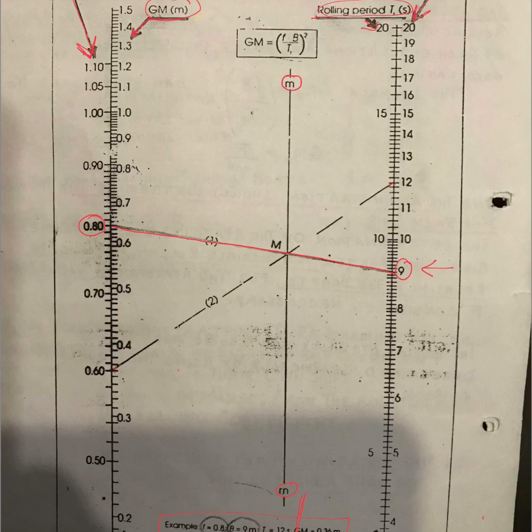The line in the center, which is mm, is also drawn in the diagram. Wherever it cuts the center line, that point is marked as M. Then you take the rolling period of 12 seconds and draw a line from the rolling period, making sure you pass that line through the point M.